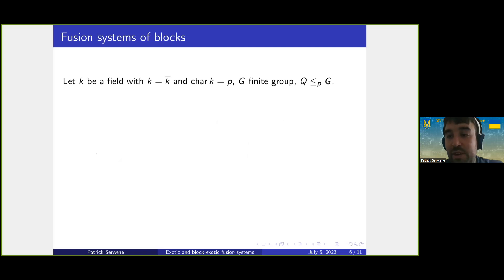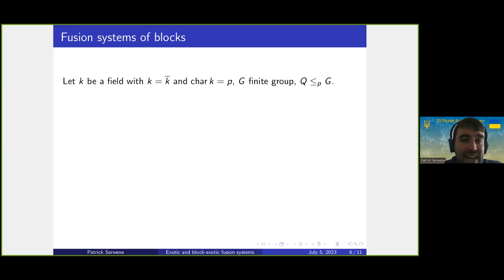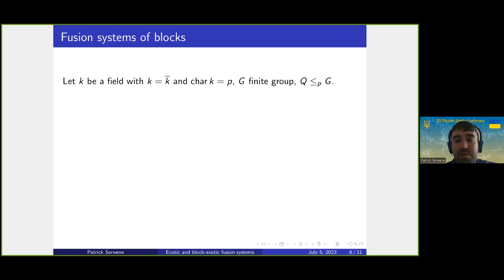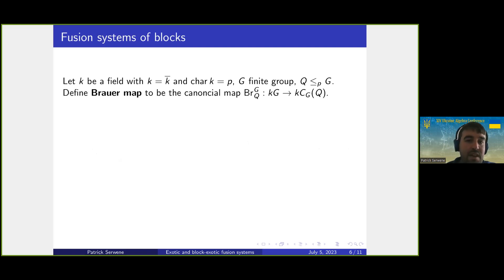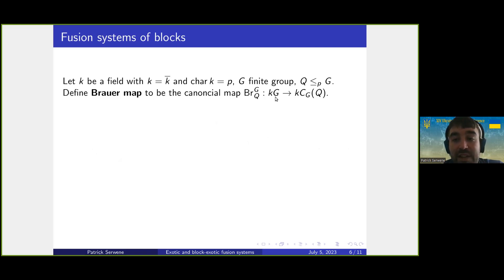Now let's define block exotic fusion systems. We take k to be an algebraically closed field of characteristic p, G a finite group, and Q a p-subgroup of G. We define the Brauer map: it is the canonical map from the group algebra of G to the group algebra of the centralizer of Q in G, where we forget all coefficients not in the centralizer. We denote it by Br_{G,Q}.